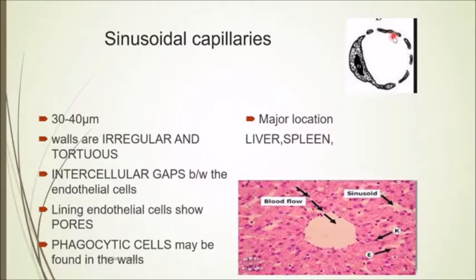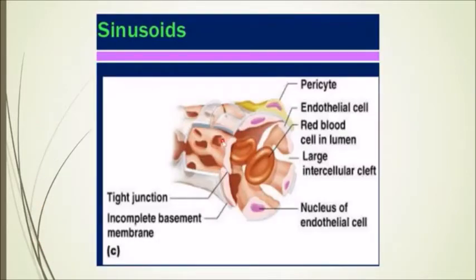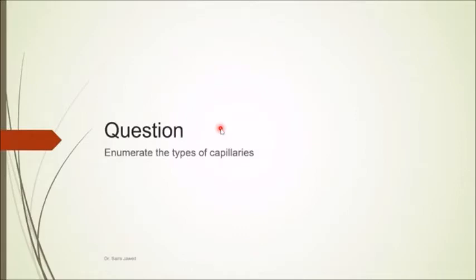In sinusoids, intercellular gaps are present between the cells. Phagocytic cells may be present in the wall of these capillaries so that bacteria or harmful substances can be engulfed and processed along the walls. The cells are wide apart with gaps in between.